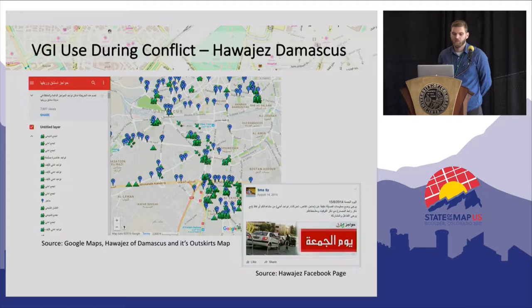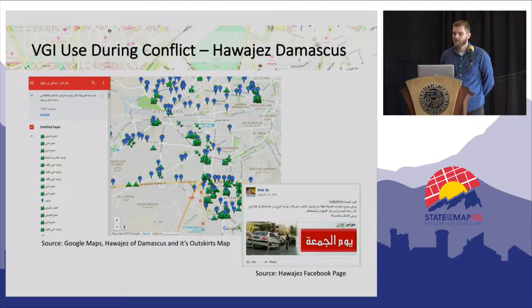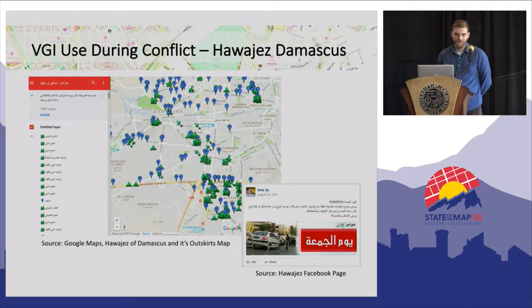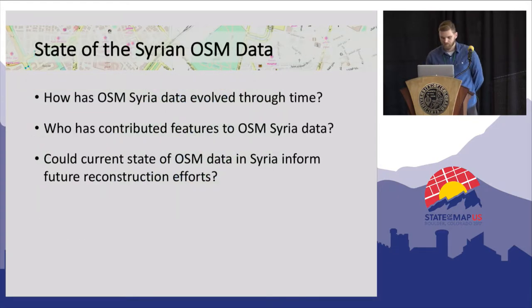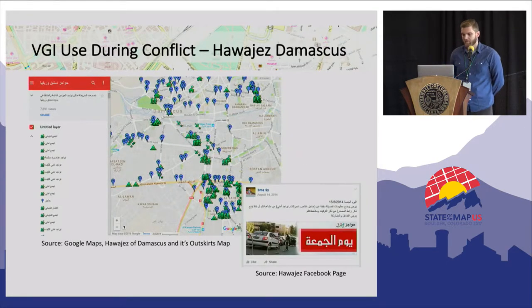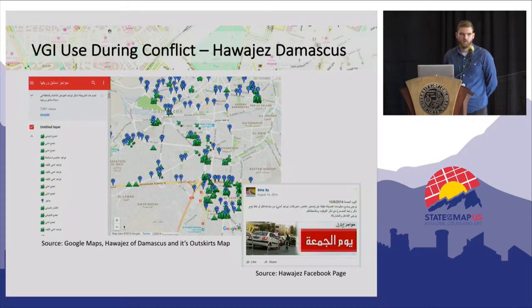This is an example of where Syrians already used VGI during the conflict. This is a group based in Damascus that encouraged citizens to report the locations of checkpoints, snipers, and troop gatherings. The group took this information off Facebook and built a map layer in Google Maps. That layer could then be loaded by ordinary citizens into a desktop application or, more likely, a mobile phone so they could find safer routes to navigate the city. This shows the potential of using VGI in the future during reconstruction.